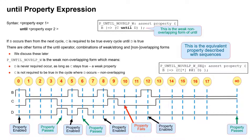Here B occurs and C is true the next cycle, but the cycle after cycle 10 is not, and D is not true — therefore that's a failure at cycle 10. B is true here; C goes high the next cycle and stays high for infinity and D doesn't occur, so the property will pass. Formal and simulation will indicate that property is passing, even though D never occurs. That's what a weak property is.